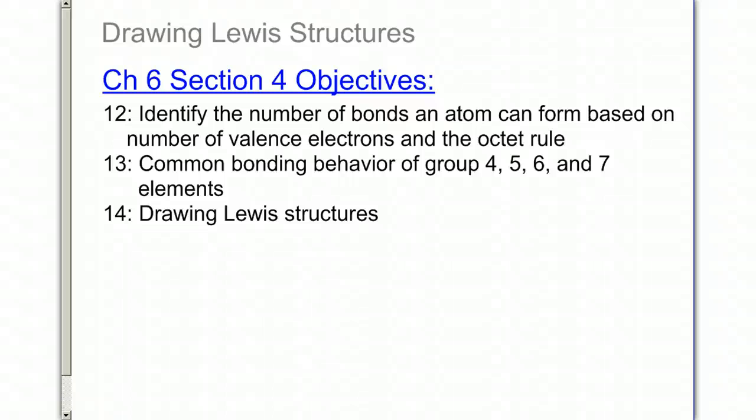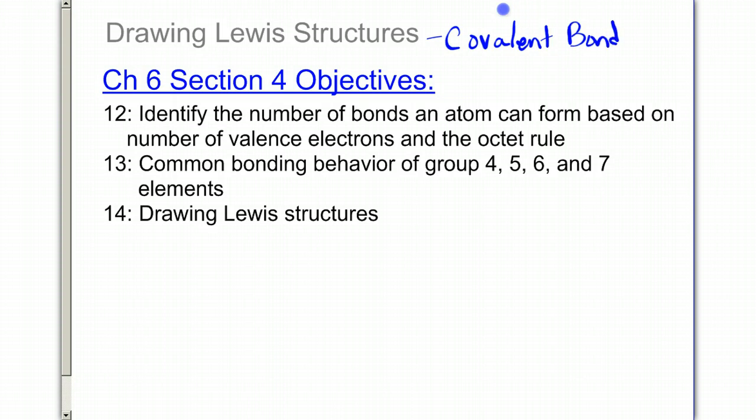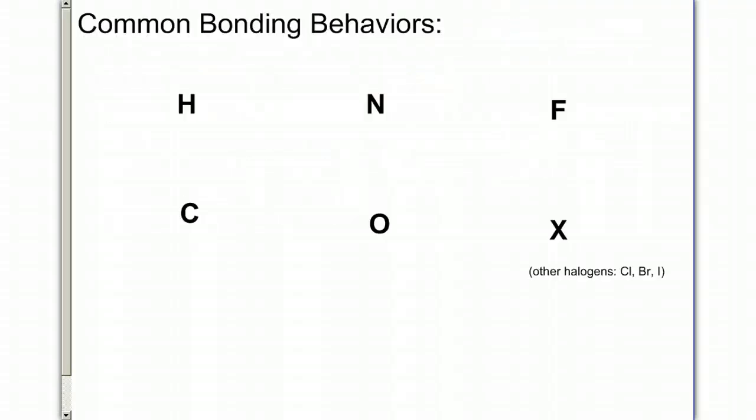Chapter 6, Section 4, we're going to start drawing Lewis structures. We only draw Lewis structures for covalent bonds. We're also going to identify the number of bonds an atom can form based on the number of valence electrons and the octet rule, the common bonding behaviors of groups 4, 5, 6, and 7, and then we'll start looking at the rules of drawing a Lewis structure.